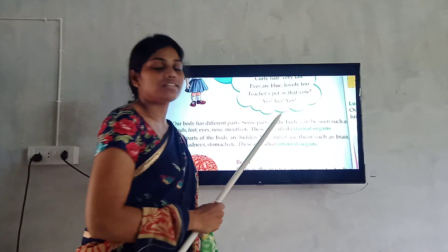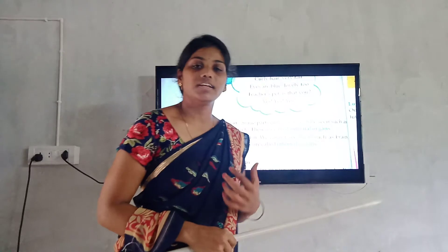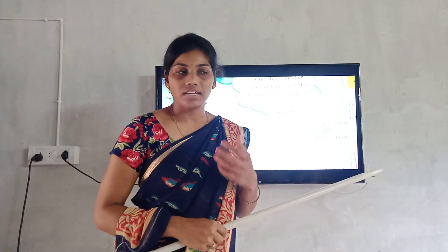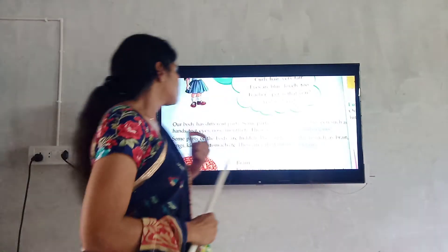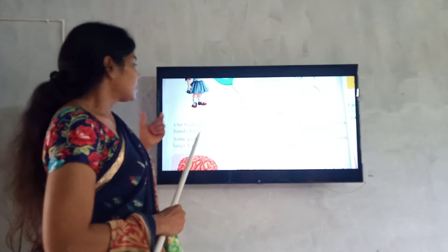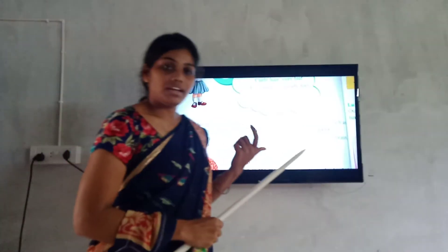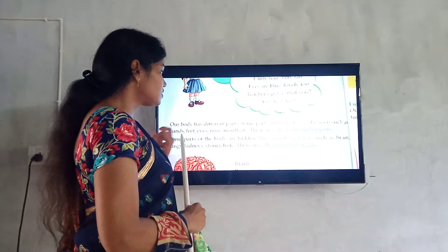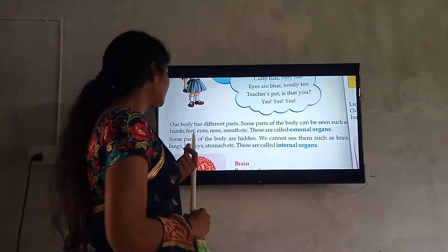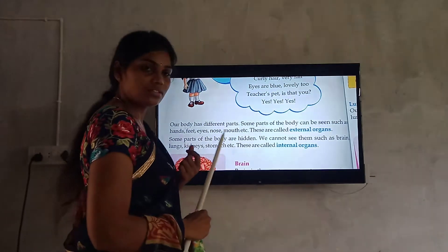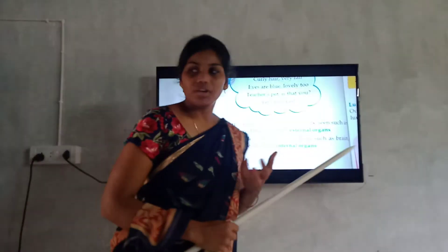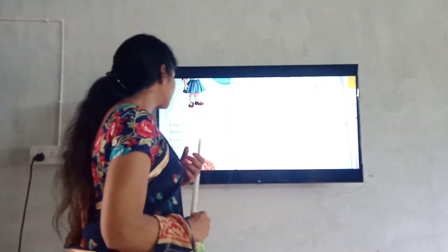External organs — the parts we can see and touch from outside are called external organs. So external organs include hands, feet, eyes, nose, and mouth. These are called external organs, okay.